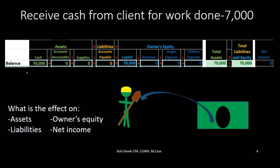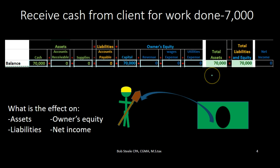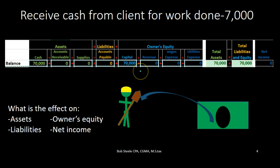We are going to start off here with a beginning balance. Before this transaction happens, all we have is cash and capital. That means that assets equal liabilities plus owner's equity, because all the green accounts over here equal all the orange accounts — liabilities and equity. So the left side equals the right side.